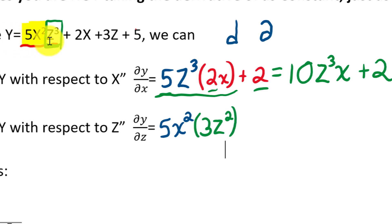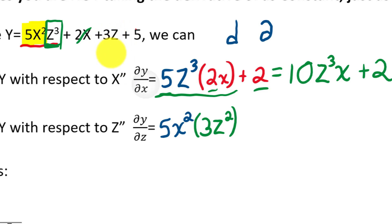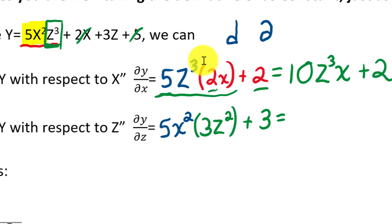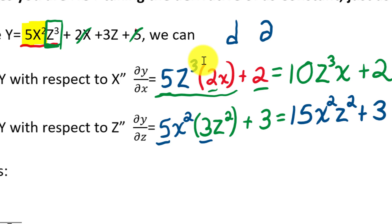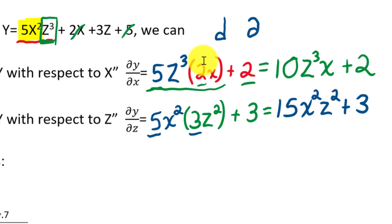Now the rest of the terms: the derivative of 2x with respect to z is zero because there's no z. The derivative of 3z with respect to z is 3, so we add +3. The derivative of the constant 5 with respect to z is zero. Simplifying: 5 times 3 is 15, giving us 15x²z² + 3. That is our partial derivative with respect to z.